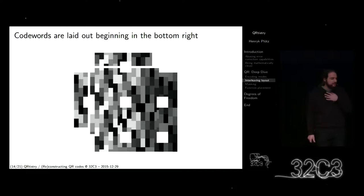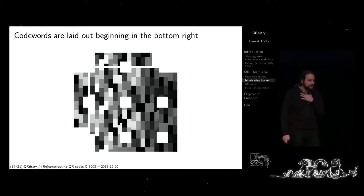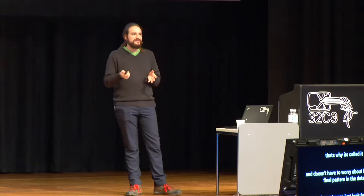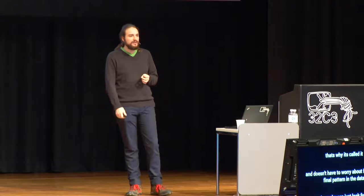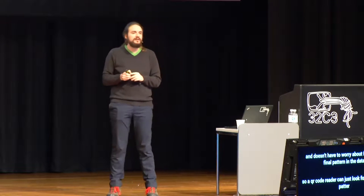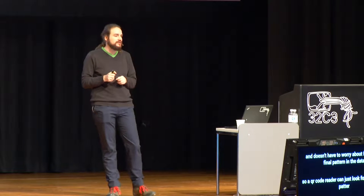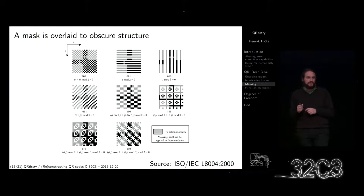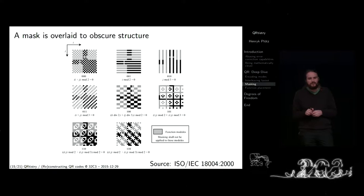Something most people don't know: there's masking involved. This is so that a QR code reader looking for the finder pattern doesn't accidentally find the finder pattern in the data. Even if you encode data that would produce a finder pattern in the encoding, you would not see it in the QR code. There are seven different masks that are just XORed onto the code. The specification says you try all seven masks, calculate how bad the resulting code is, and then choose the least bad one.